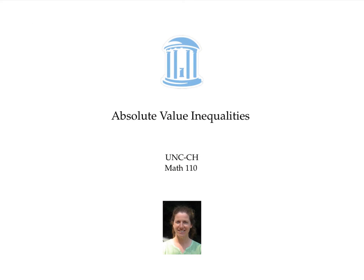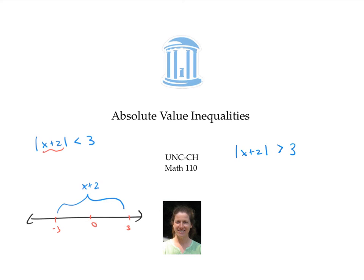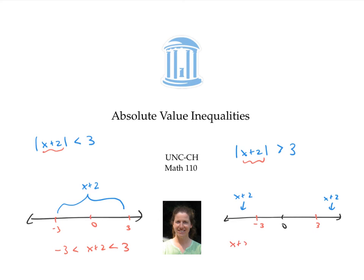When solving absolute value inequalities, it's good to think about distance. An absolute value of something that's less than a number means that whatever's inside the absolute value signs is close to zero. On the other hand, an absolute value of something being greater than a number means that whatever's inside the absolute value sign is far away from zero, because its distance from zero is bigger than a certain number. Drawing these pictures on the number line is a helpful way to rewrite the absolute value inequality as one that doesn't contain an absolute value sign — in one case it would be negative three is less than x plus two is less than three, and in the other case, either x plus two is less than negative three, or x plus two is greater than three.